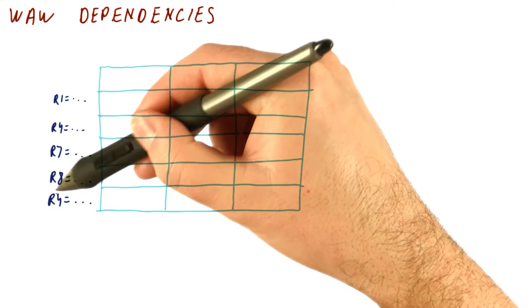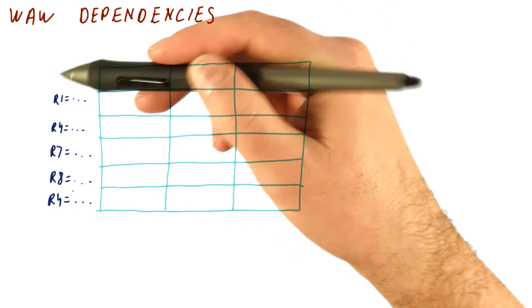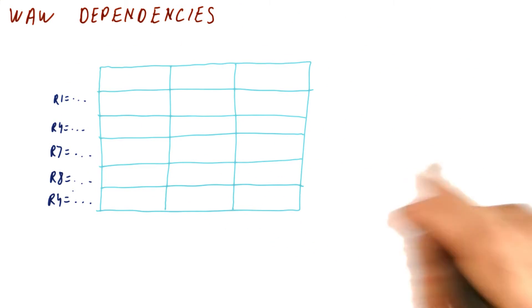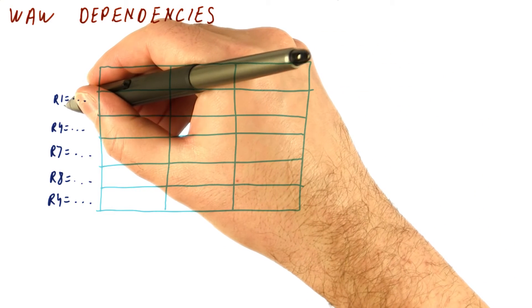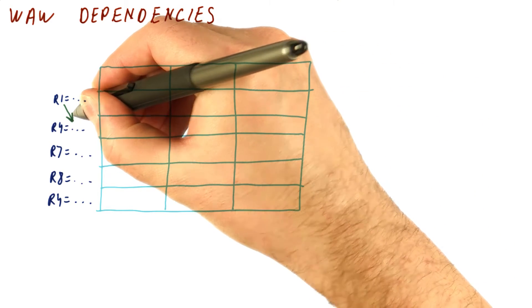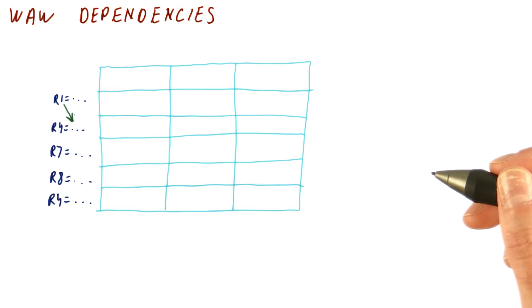So we will see that the problem will be with the second and the fifth instruction writing to R4. So what can happen is let's say that there is a read-after-write dependence between the first and the second instruction.